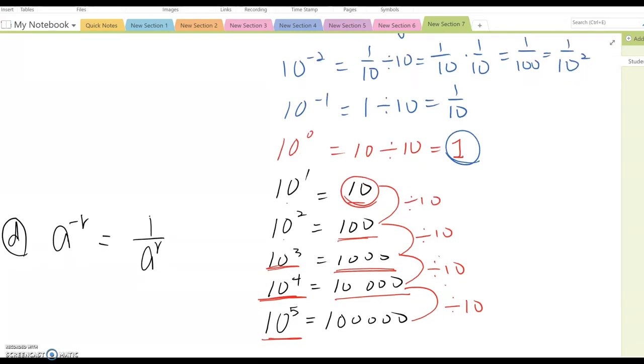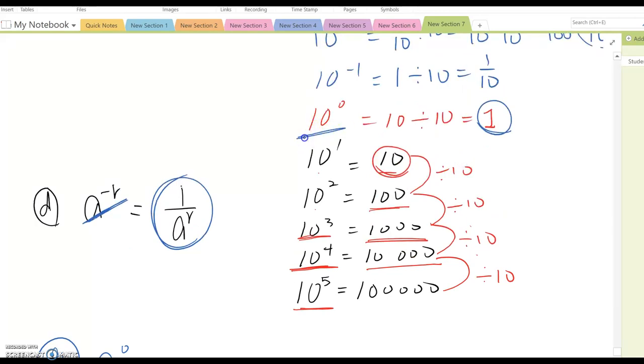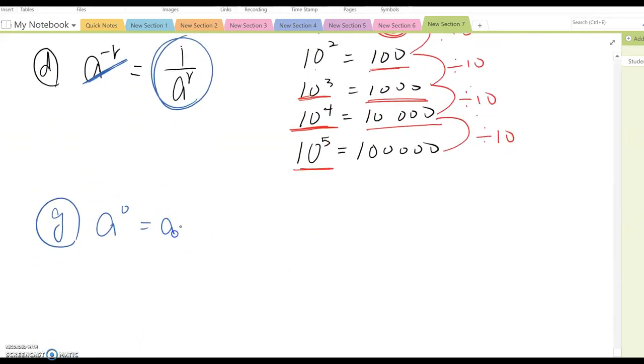So, based on this procedure, we can generate two different properties. So, whenever we have A to the negative R, like this. Then, as you see, we can just make a fraction and then make a positive power. And then, it also reflects property G. G is A to the 0th power. So, as you see, anything to the 0th power becomes 1. Because it means A divided by A, that is the same meaning here. So, it becomes 1 basically.